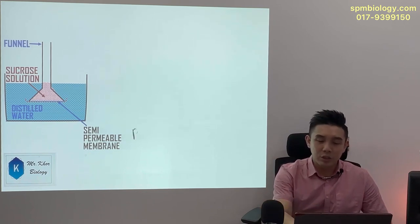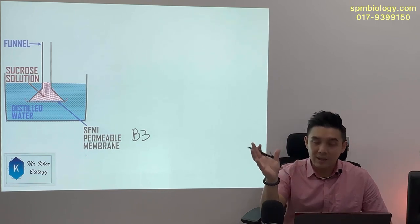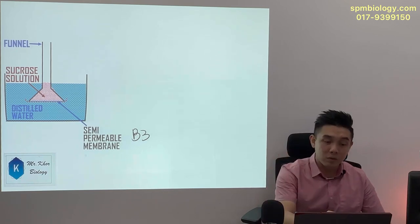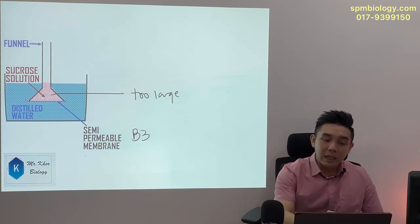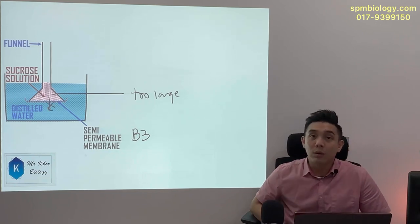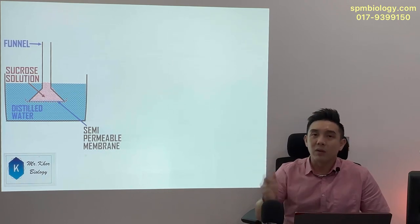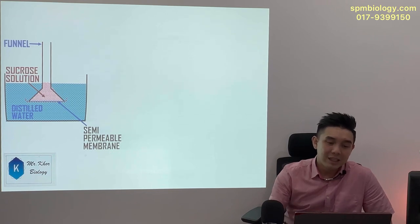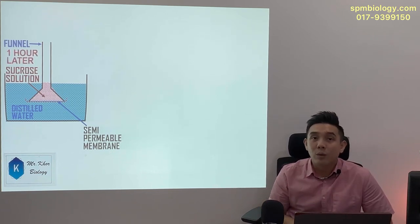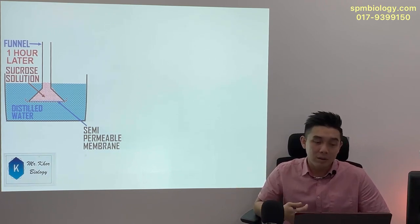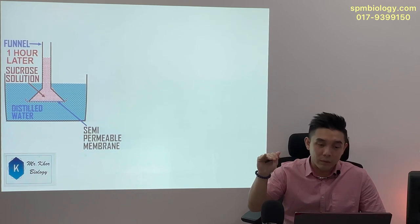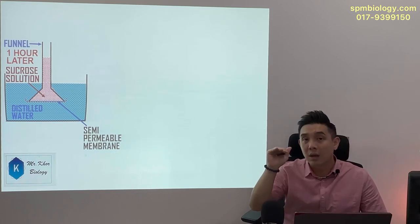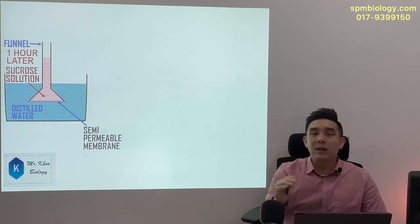The sucrose solution doesn't mix with distilled water because there is a semi-permeable membrane. Semi-permeable means they only allow certain substances to pass through. Because sucrose molecules are too large in size, they are unable to move and mix with the distilled water. I set up this osmometer and then go for lunch. One hour later, when I come back to the science lab, what would I expect to see?